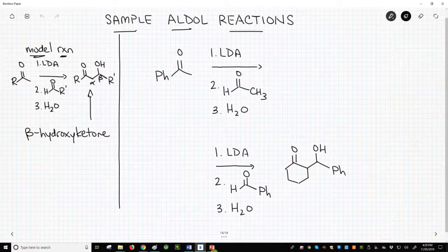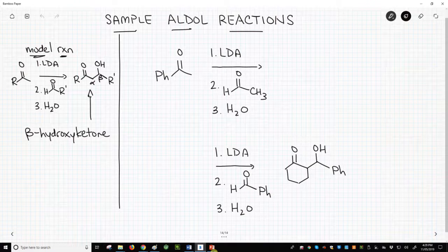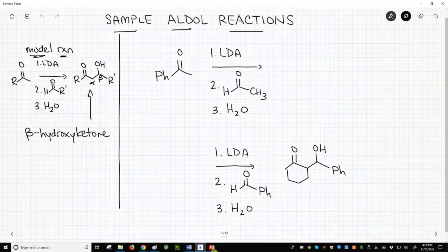The enolate then attacks an aldehyde to make a tetrahedral intermediate. The final step, step three, is addition of water to make the alcohol in our final product, which is a beta-hydroxy ketone.